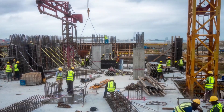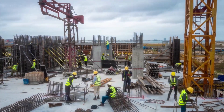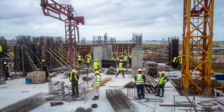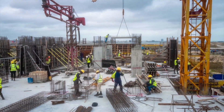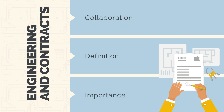For any construction project to be successful, it requires effective collaboration between multiple different parties. All these different parties need to come together to deliver the project, and contracts facilitate this collaboration process. In this introduction section, we'll talk about why collaboration is critical to the success of engineering projects, what contracts are and how they facilitate collaboration, and the importance of understanding, interpreting, and using construction contracts.